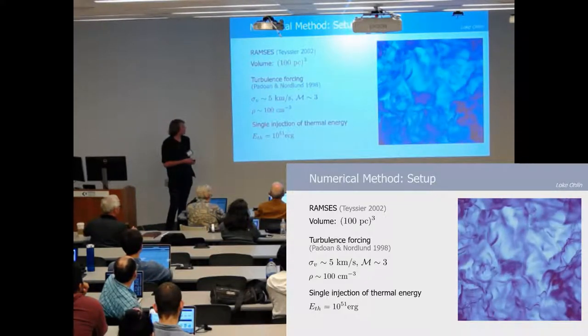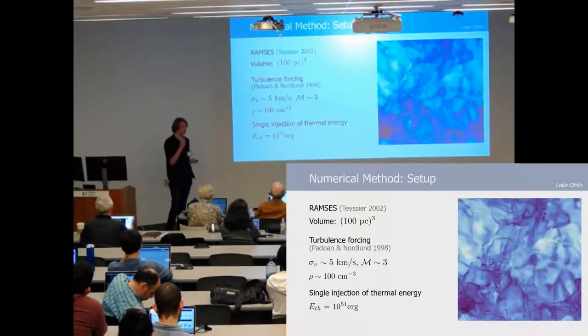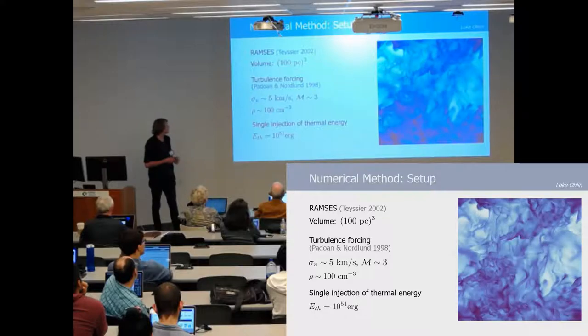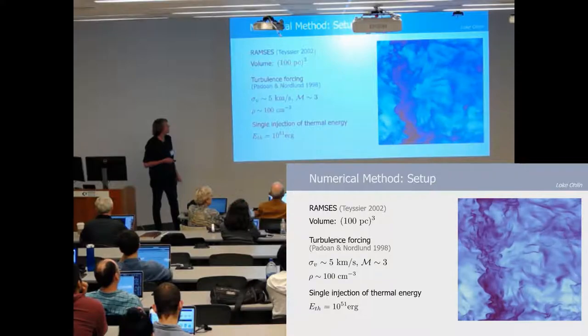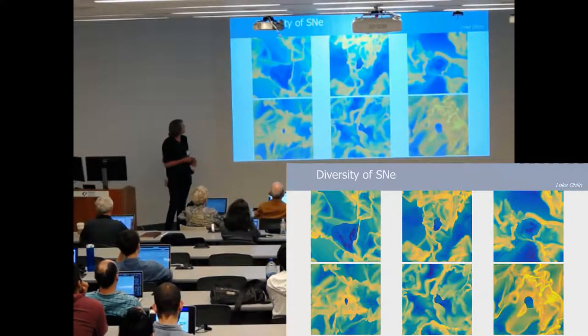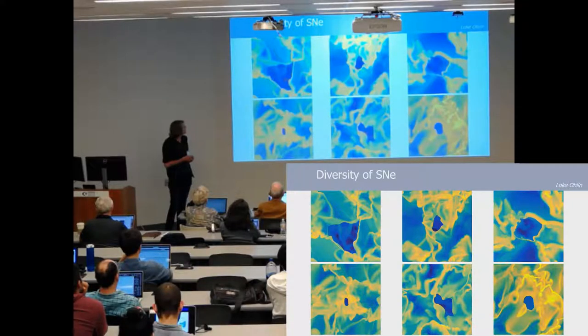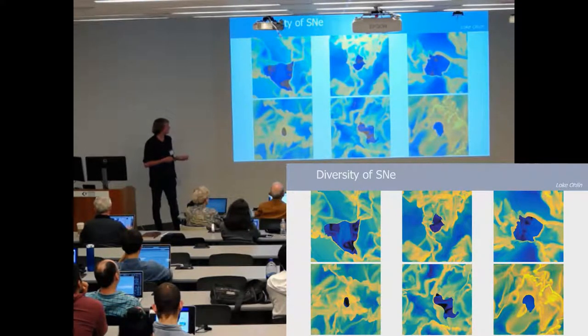We let this run for several turnover times to reach a statistical steady state, after which we injected 10 to the 51 ergs of thermal energy into the center of the box. We did this over several realizations since the structure of the gas could be widely different and to capture all of the different aspects.